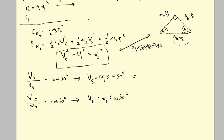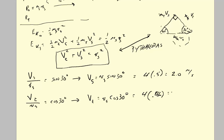Plugging in our numbers: the initial velocity of the shooter was 4 meters per second. So v_shooter_after = 4 × sin(30°) = 4 × 0.5 = 2 meters per second. And v_target_after = 4 × cos(30°) = 4 × 0.866, which is about 3.46 meters per second.